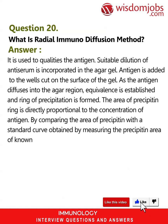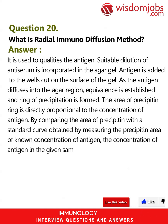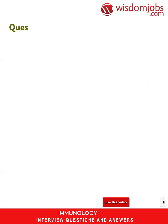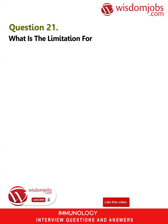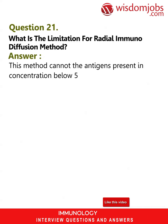By comparing the area of the precipitin ring with a standard curve obtained by measuring the precipitin area of known concentrations of antigen, the concentration of antigen in the given sample can be determined. Question 21: What is the limitation of the radial immunodiffusion method? Answer: This method cannot detect antigens present in concentrations below 5–10 micrograms/ml.